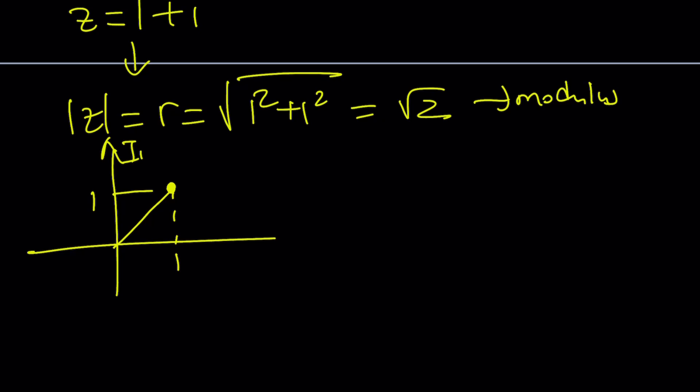This is the imaginary axis, this is the real axis, and this is our number 1 plus i. And this is the theta, the angle that our vector, number, complex number, whatever you want to call it, makes with the positive x-axis.